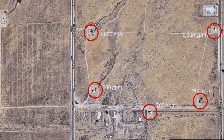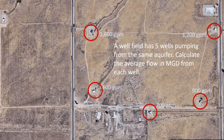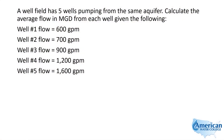So all of these wells are tapped into the same aquifer in this well field. The question reads something like: a well field has five wells pumping from the same aquifer — calculate the average flow in MGD from each well. So really all we're trying to do here is calculate the average flow rate. Given this information, our five wells at these different flow rates, how do we calculate the average flow?